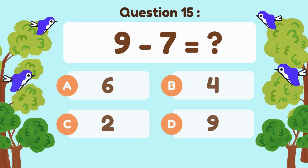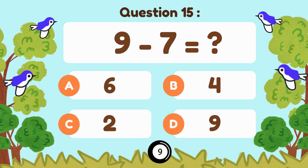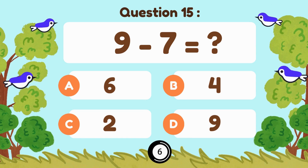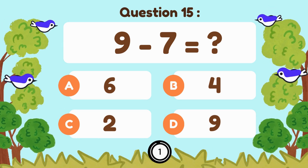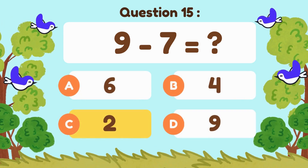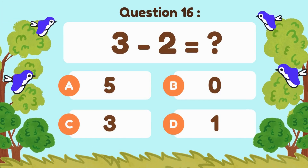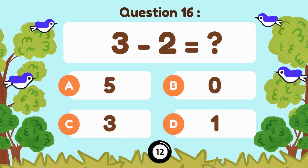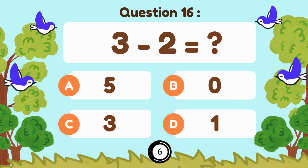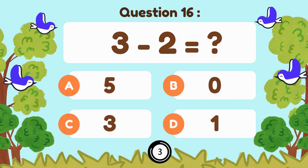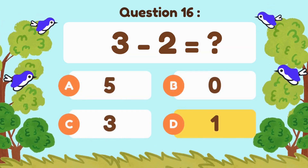9 minus 7. 9 minus 7 is 2. 3 minus 2. 3 minus 2 is 1.